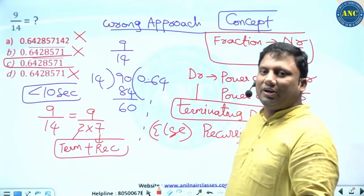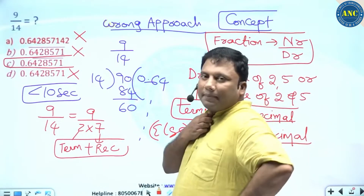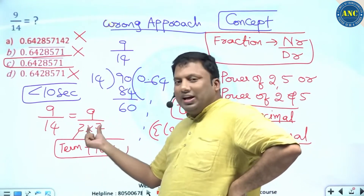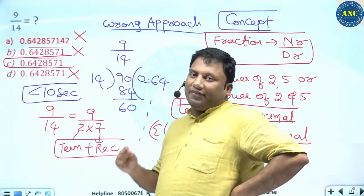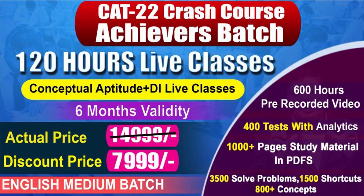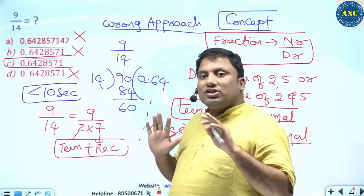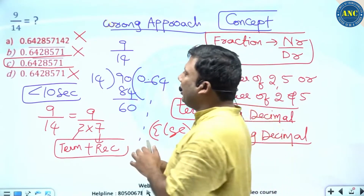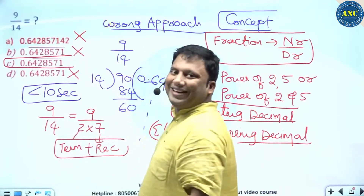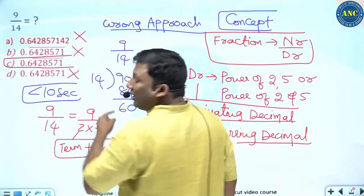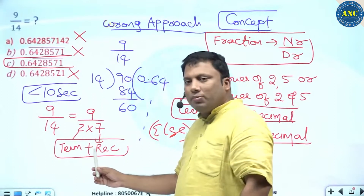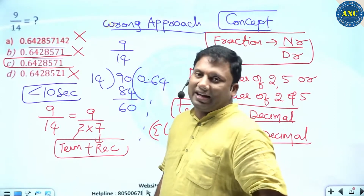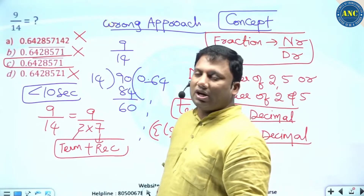How much time did it take to solve this question? Let me repeat: 9 by 14. 14 is a combination of 2 and 7. If the denominator contains a power of 2 or power of 5, it is a terminating decimal; 2 gives terminating, 7 gives recurring. So the answer must be a combination of terminating and recurring. An option with no bar is terminating; an option with a bar over the entire digits is recurring; the correct answer has a combination of terminating and recurring.